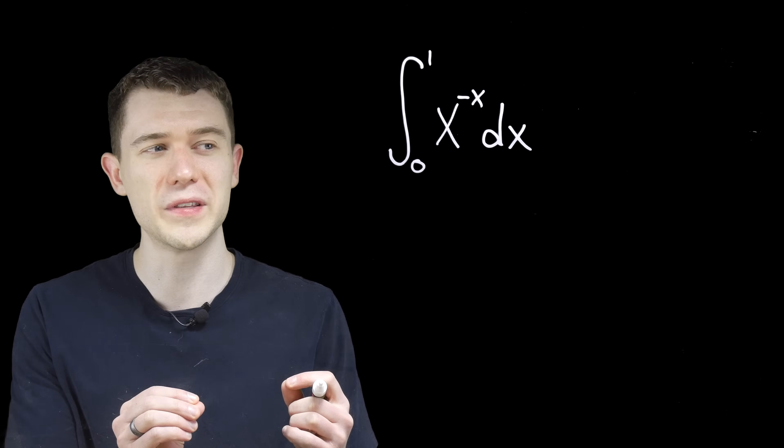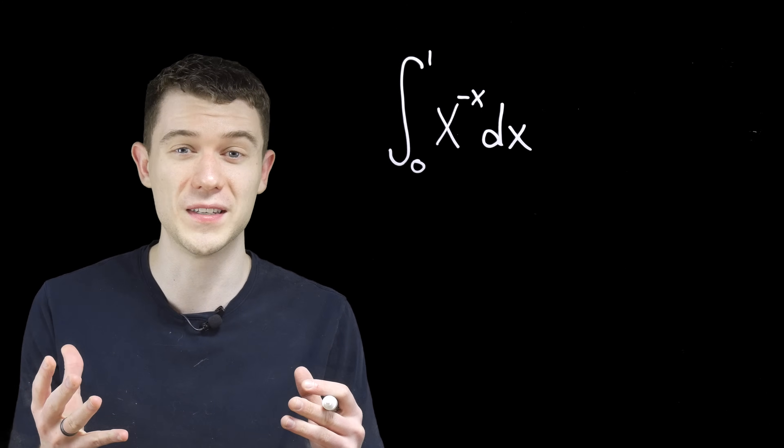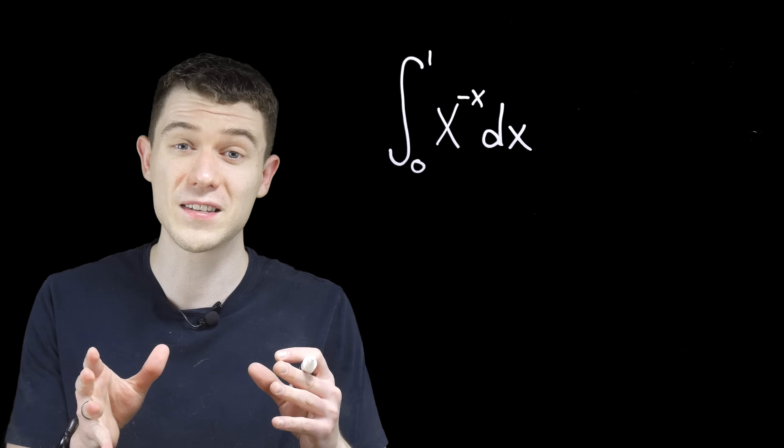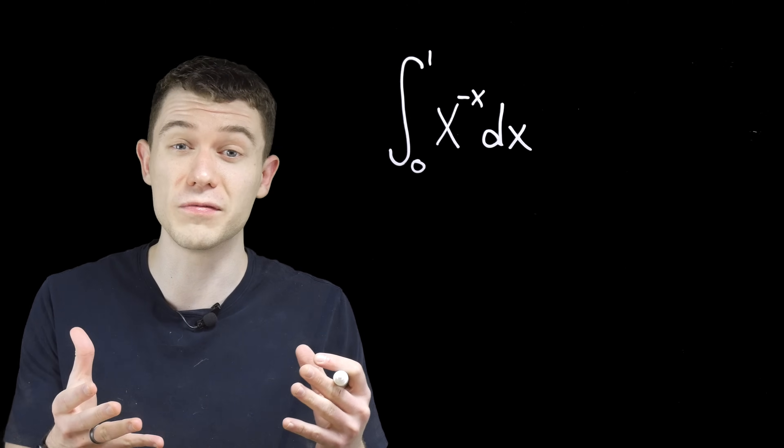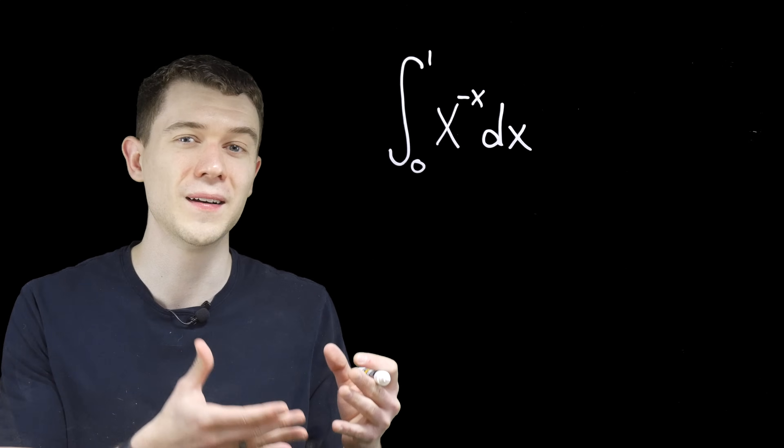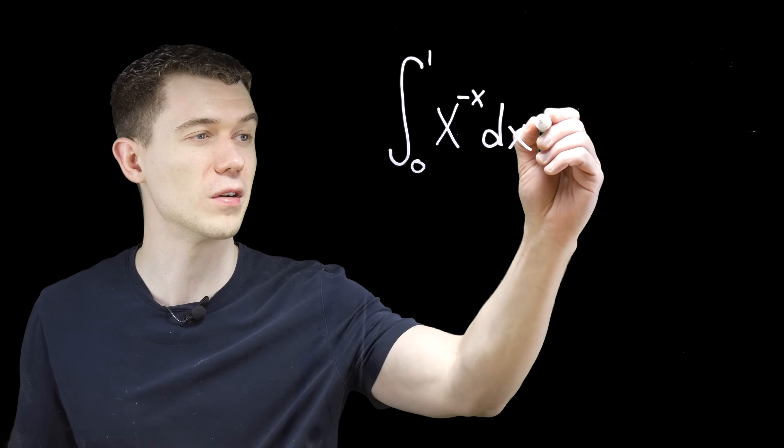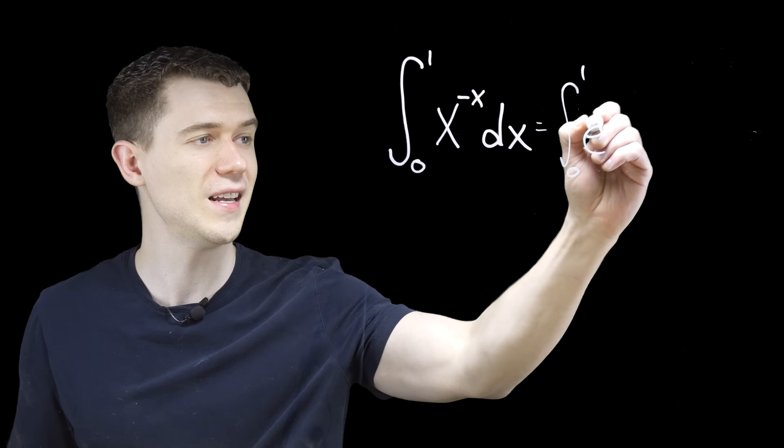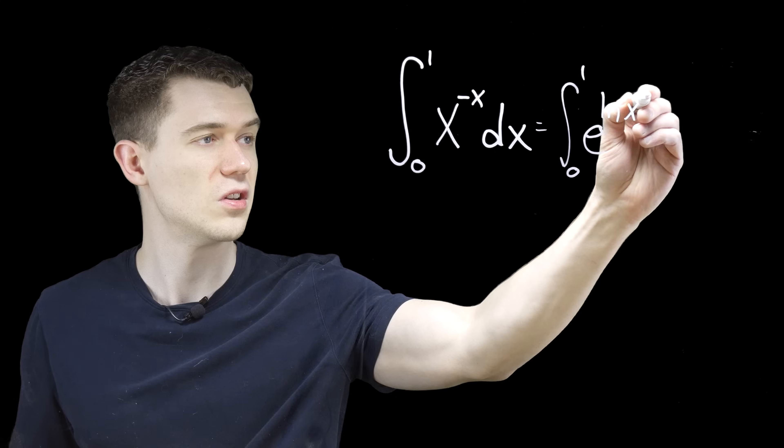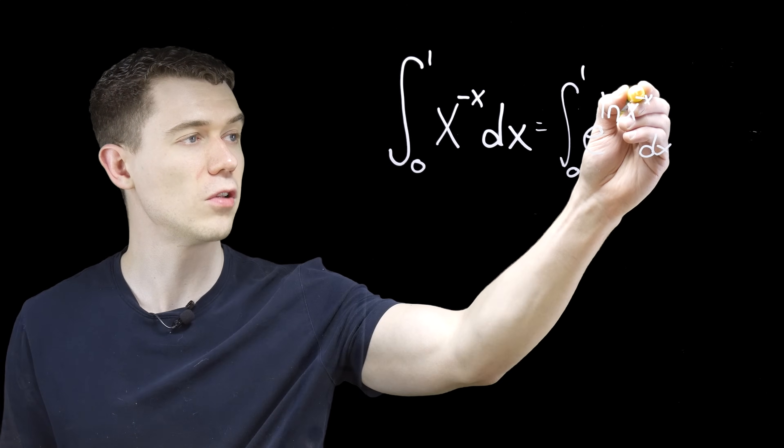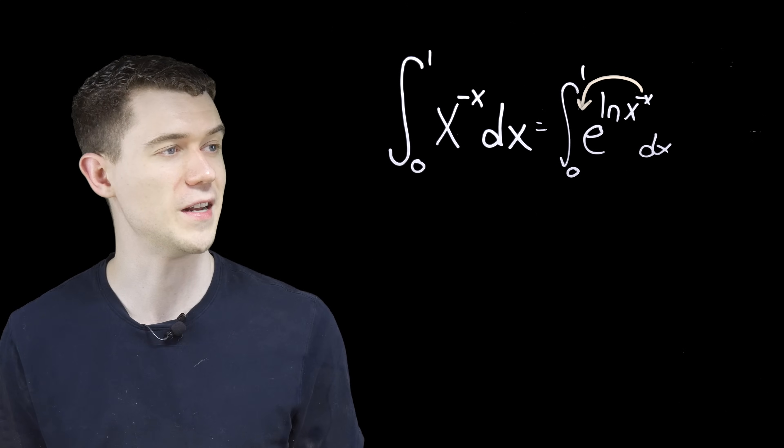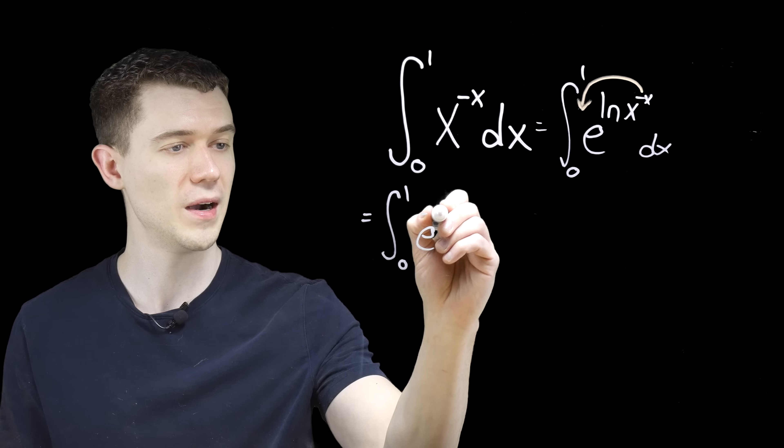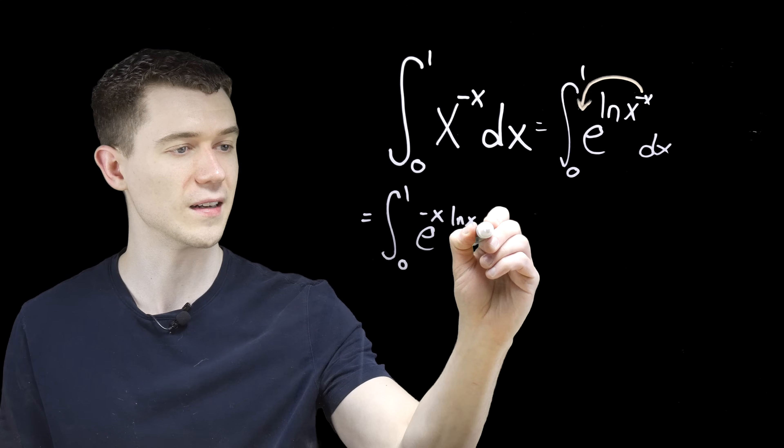And we're going to start with the usual thing that we would do in situations like this. When we have a variable to a variable power, we often insert an e to the ln. Those inverse functions that cancel out, we can just insert them and take advantage of properties of logarithms. So let's do just that. Let's put an e to the ln in here. So that we can use that property of logarithm, we can take that exponent and drop it down front. Let's rewrite this, same bounds, e to the minus x ln x dx.